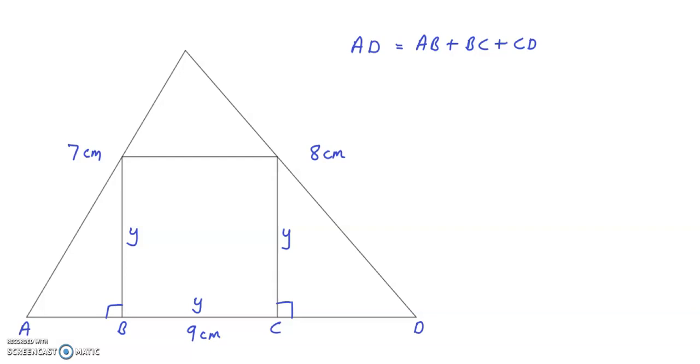So first of all, I am going to look at this angle A. So using the cosine rule, cos A equals 7 squared plus 9 squared minus 8 squared, and that equals 11 over 2 times 7 times 9. And that equals 11 over 21.